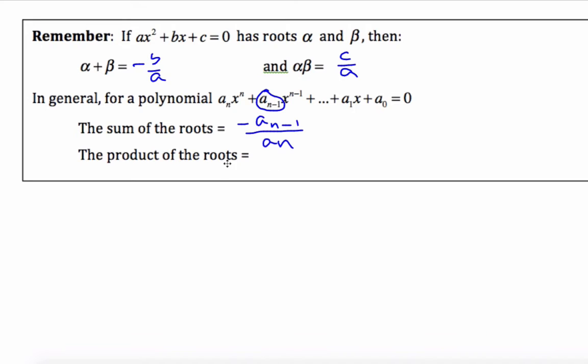And the product of the roots is going to be (-1)^n. So that means it's plus minus plus minus. It changes as even. This is positive, as shown in the quadratic. Times a_0 over a_n.